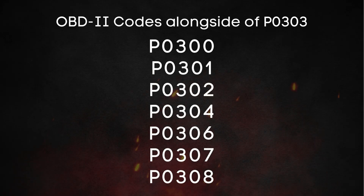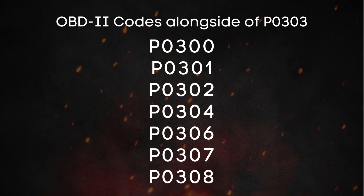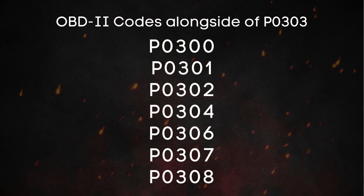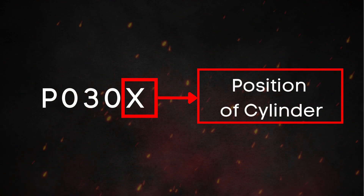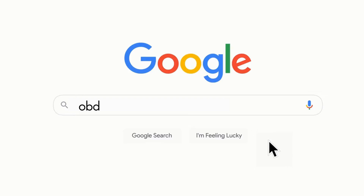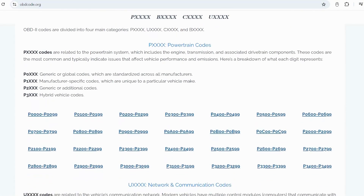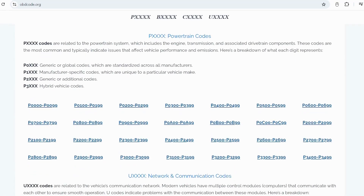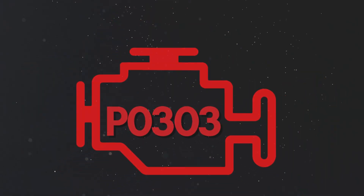You may also find another OBD-II code, like P0301 to P0308 alongside P0300. The last number in these accompanying codes refers to the affected cylinder. If you want to know more about what these codes mean, visit our website, obdcode.org, for a detailed explanation.